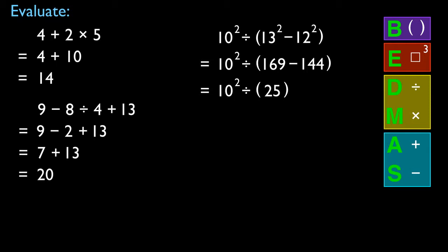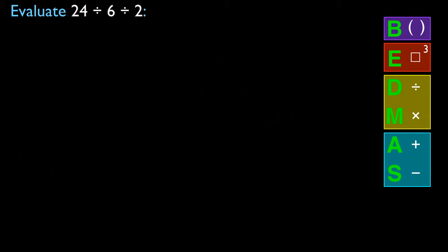Now I've got a plain number in brackets, so there's no more work to be done inside them — the brackets are finished. Looking at what's left, I have an exponent and a division. Exponents come before division, so I perform 10 squared, which is 100, and then divide by 25. 100 divided by 25 is 4.